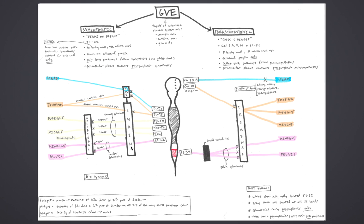Pain pathways utilize sympathetic pathways to reach the CNS. For example, cardiac chest pain will travel retrograde on sympathetic nerves serving the heart and re-enter the sympathetic chain by utilizing white rami. Once in the chain, they will travel to the dorsal root ganglia associated with the thorax at T1 to T5. Pain follows sympathetic pathways; reflexes follow parasympathetic pathways. Additionally, white rami carry not only GVE preganglionic sympathetics, but also GVA fibers associated with pain.